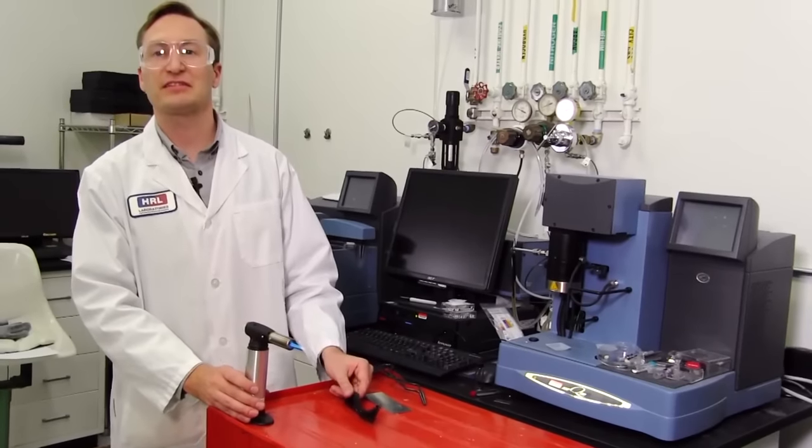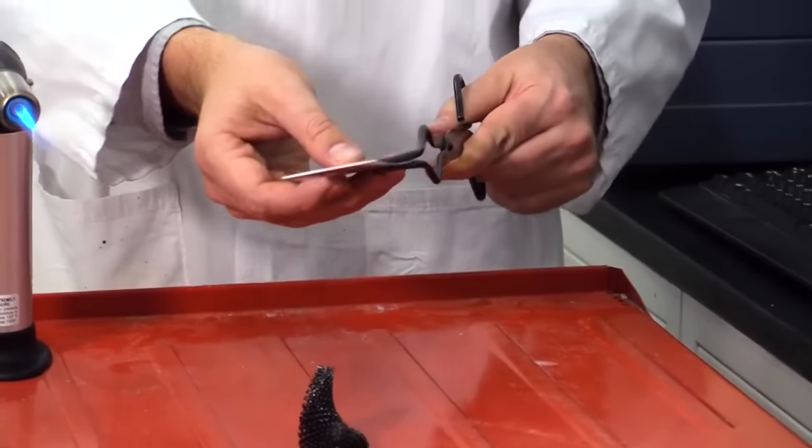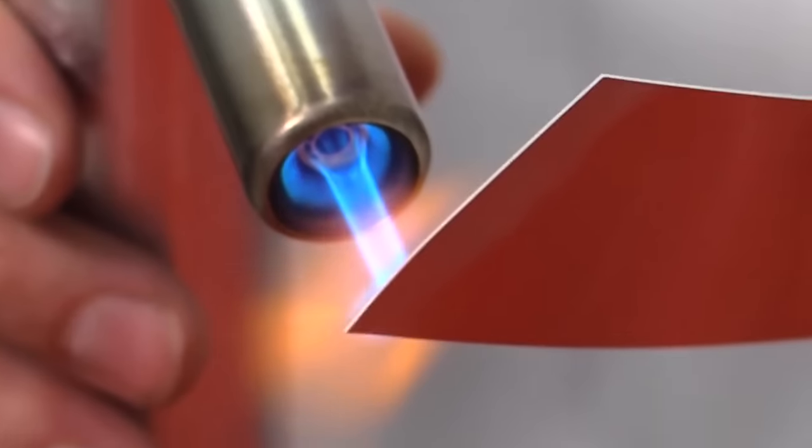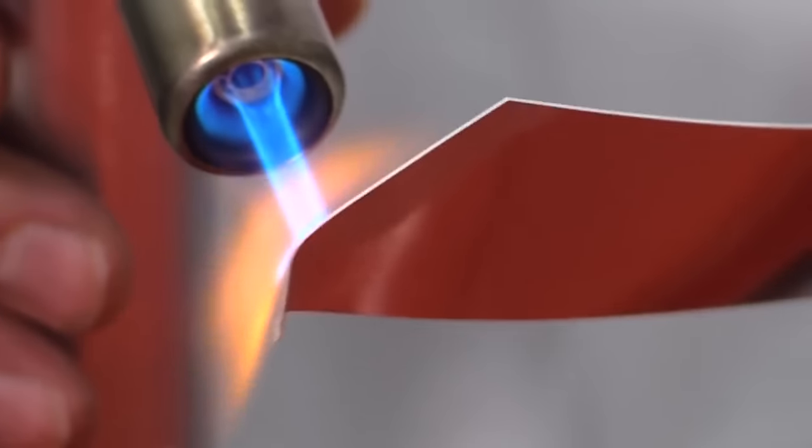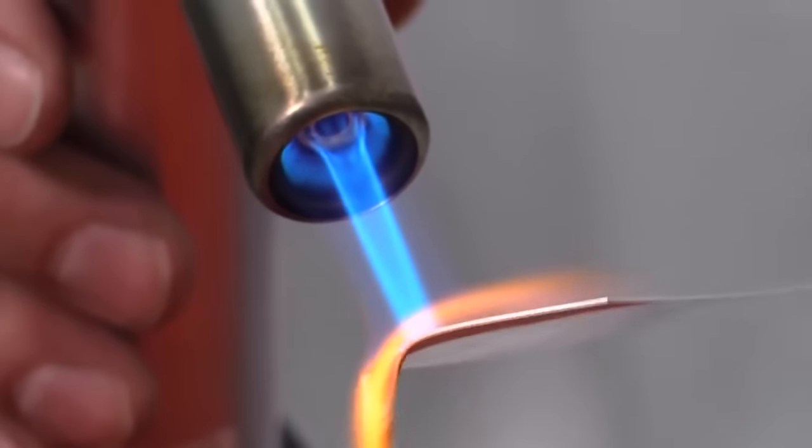If I do the same test with a metal sheet, you will see that the metal quickly melts. I also have to use tongs because the metal conducts heat much faster.